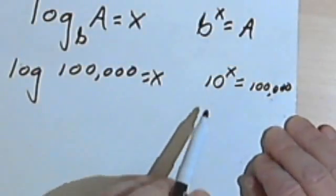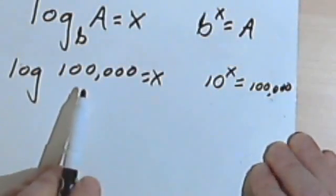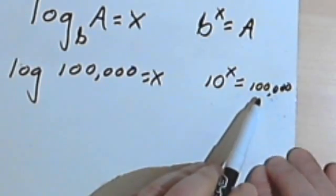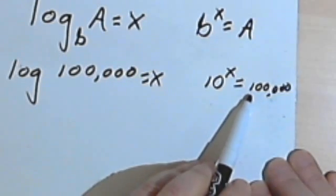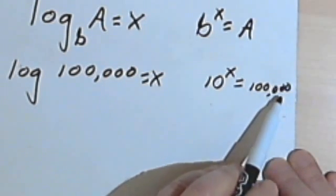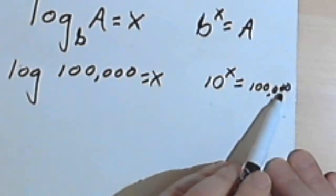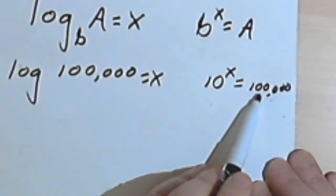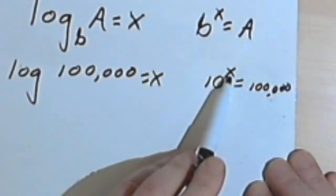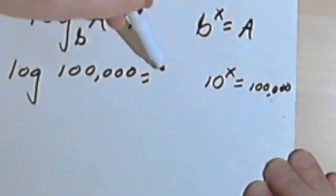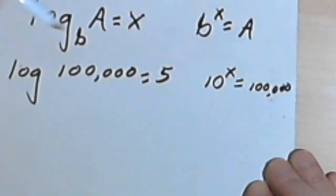Now, a very simple thing to do. If you've got 10 to some power equals some number, a 1 and a bunch of zeros, just count the zeros and that's what the power is. So I've got 1, 2, 3, 4, 5 zeros. That means the x, the power is 5.